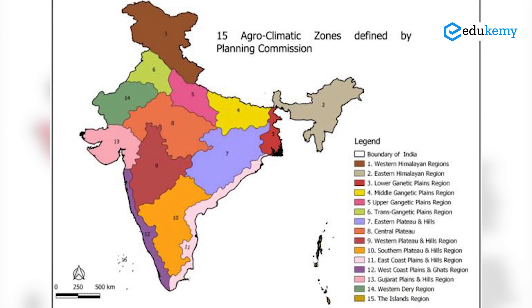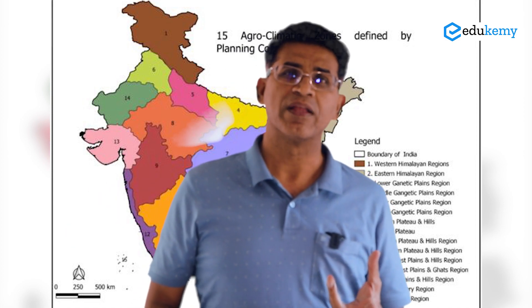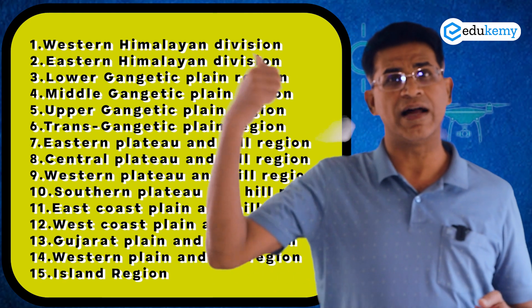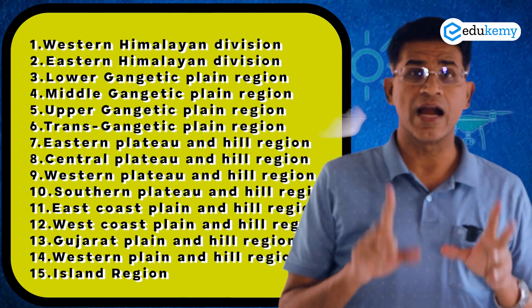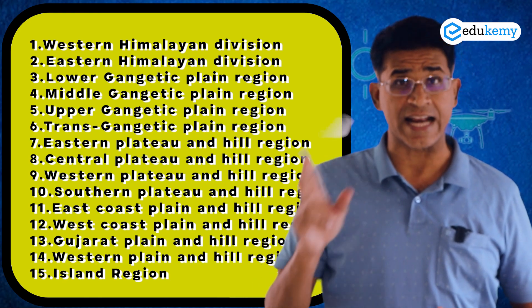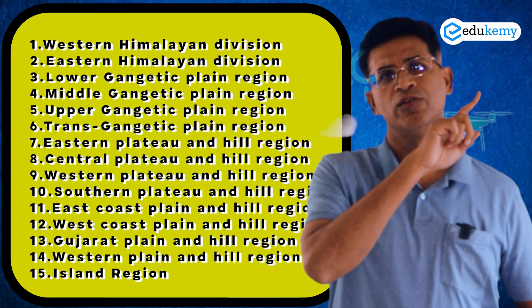Now, agro-climatic regionalization — which is what you will remember. There are many schemes, but the most popular is the one given by ICAR, which was also adopted by the Planning Commission. We have divided India into 15 agro-climatic regions. If you look at previous question papers from 1999–2000, you just had to list down the regions with a map. The two Himalayan regions are West Himalaya and East Himalaya. For the northern plains, remember five divisions: Lower Ganga, Middle Ganga, Upper Ganga, Trans Ganga, and Western Plains of Rajasthan. So that's two Himalayas plus five northern plains — seven so far.